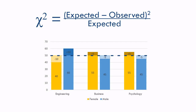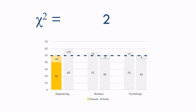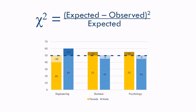Let's work through an example. Let's take our first group — women in engineering. We have an observed value of 40 and an expected value of 50, so we fill those in the formula. 40 minus 50 is negative 10 — that's why there's a negative 10 in the lighter section of the bar. If we square negative 10, we get 100. 100 over 50 is 2. So our chi-square value for this first group is 2. Note that the next group, men in engineering, would also have a chi-square value of 2, because the observed value is also 10 away from the expected value.